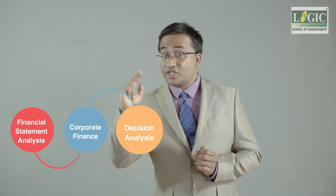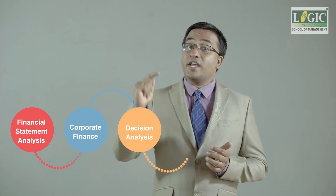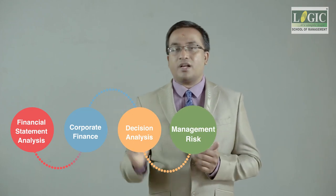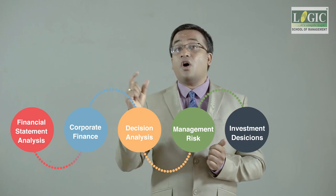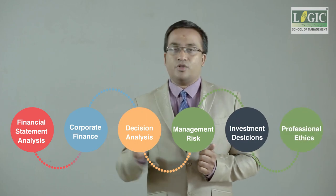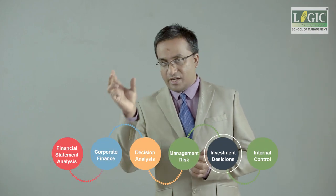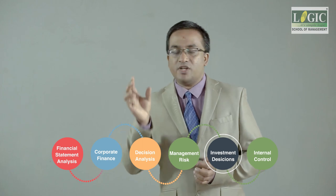Under part two, you have six topics: financial statement analysis, corporate finance, decision analysis (also called marginal costing), risk and portfolio management, investment decisions or capital budgeting, and professional ethics. Our focus now is on investment decisions under part two, which carries roughly 15 to 20 percent weightage in the CMA exam.